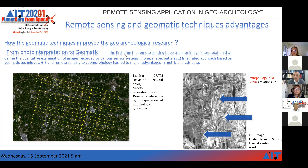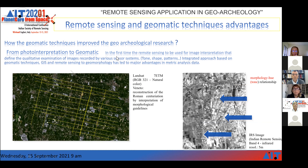How has geoarchaeological research improved? First of all, remote sensing was initially used for image interpretation — photo interpretation — which defines the qualitative examination of images recorded by various sensor systems. For example, with tone, shape, and patterns, we can study the area. The integrated approach is based on geometric techniques, remote sensing, geomorphology, and GIS, and has led to great advantages in quantitative metric data analysis.